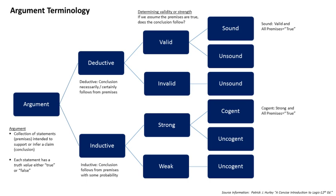Simple induction proceeds from a premise about a sample group to a conclusion about another individual. Proportion Q of the known instances of population P has attribute A; individual I is another member of P; therefore, there is a probability corresponding to Q that I has A. This is a combination of a generalization and a statistical syllogism, where the conclusion of the generalization is also the first premise of the statistical syllogism.